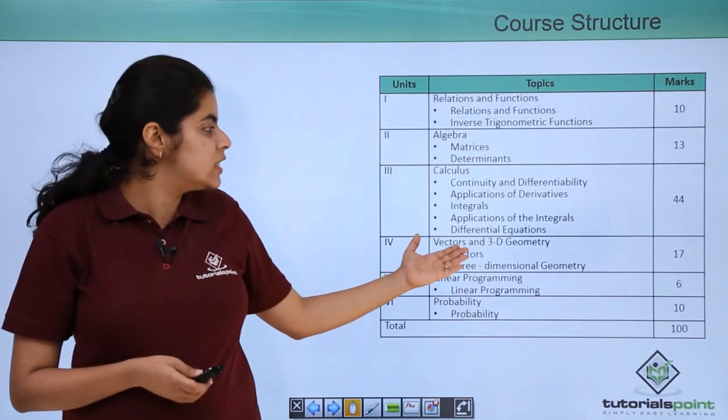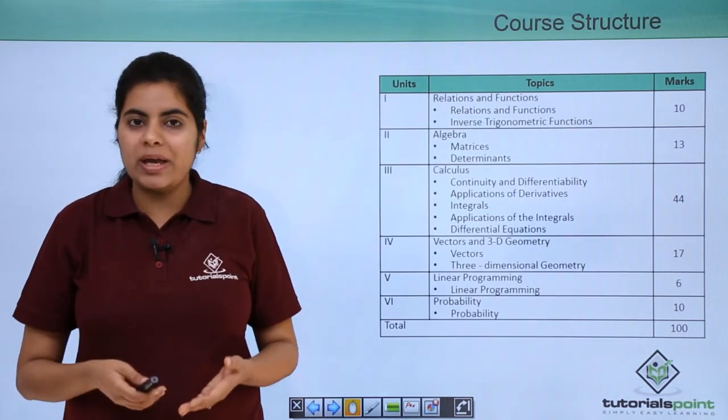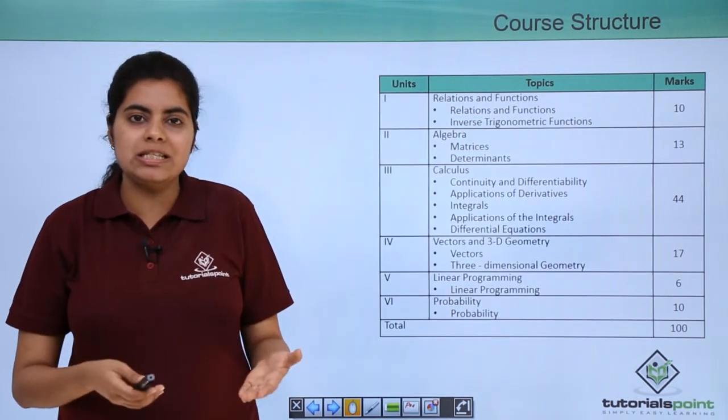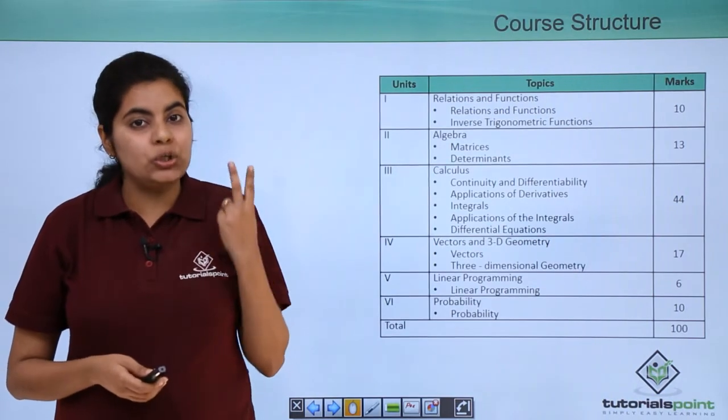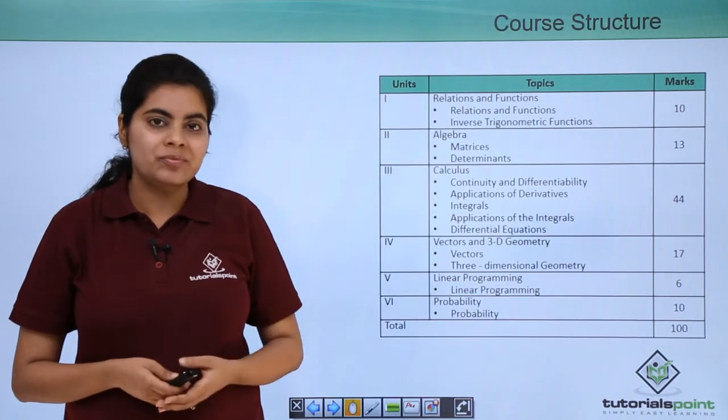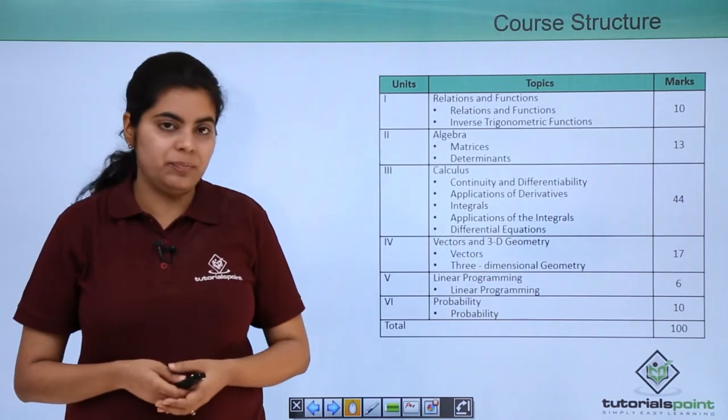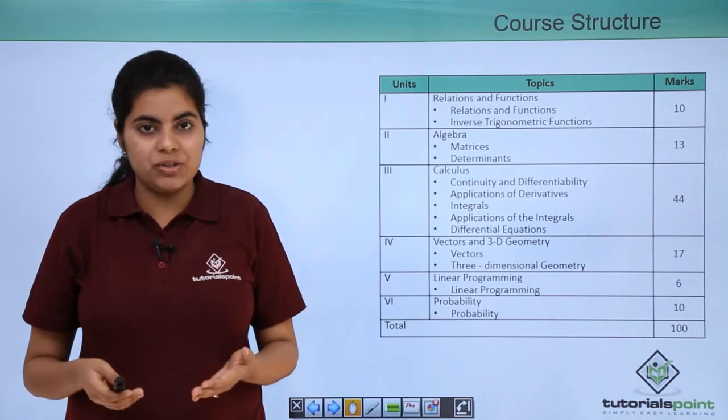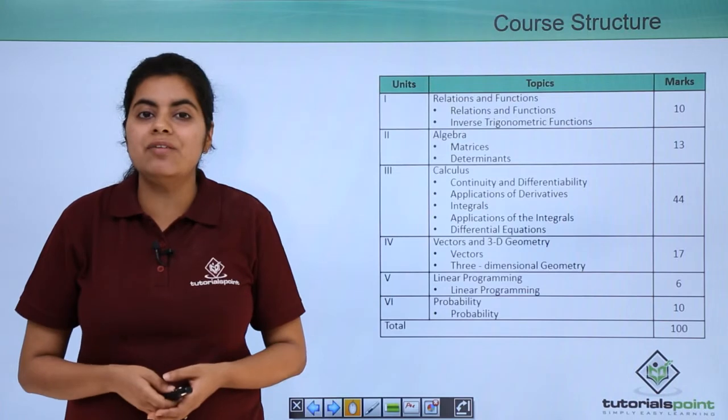Next we come to the importance of unit number four, which is vectors and 3D. So vectors and 3D means vectors and three-dimensional geometry. It includes again two chapters: the first one is named vectors and the second one is three-dimensional geometry. Both these chapters together constitute an important total of 17 marks.